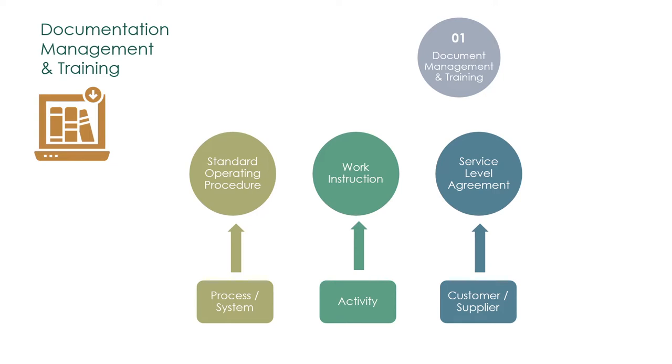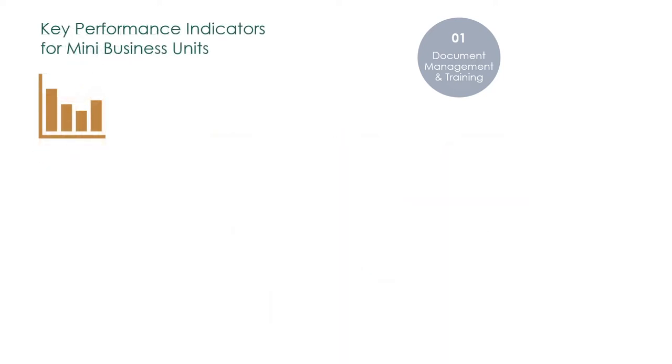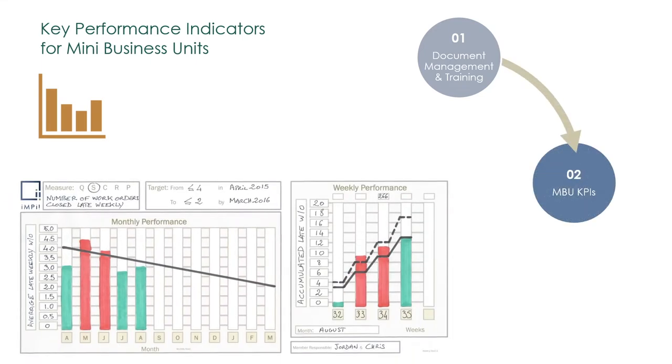All these standard documents provide the information to define what performance needs to be managed and measured. Leadership will determine which are the critical processes that they want to measure in the mini-business units. We previously covered key performance indicators in Loop 2, Manage Team Performance.